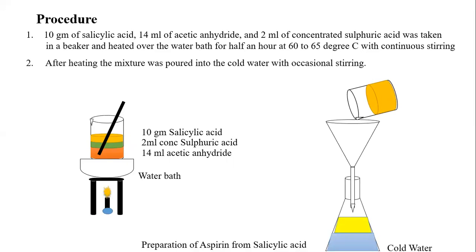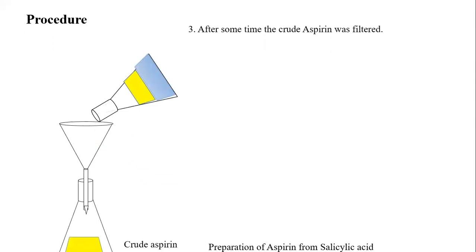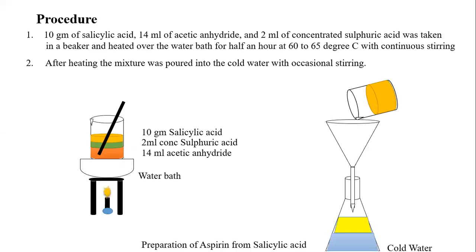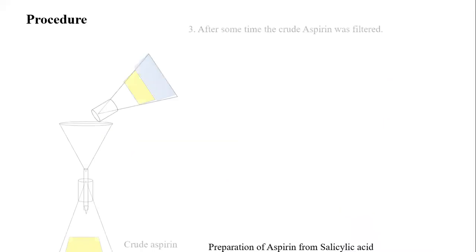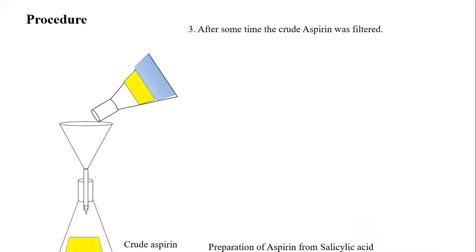After heating, the mixture is poured into cold water with occasional stirring. After some time, you can see that the mixture has formed a precipitate, shown here in yellow color. That yellow crude aspirin needs to be filtered, so here we have filtered it using a funnel into a conical flask.